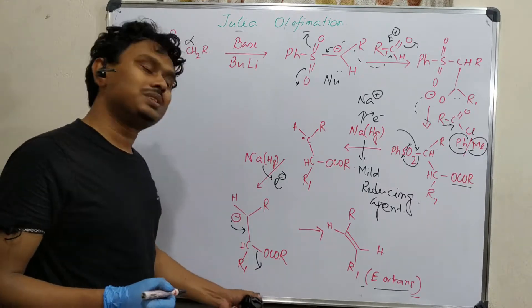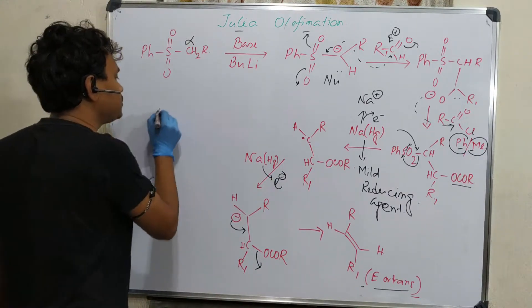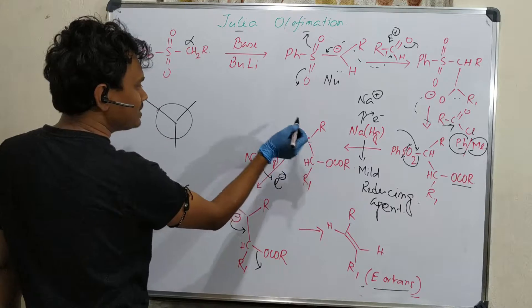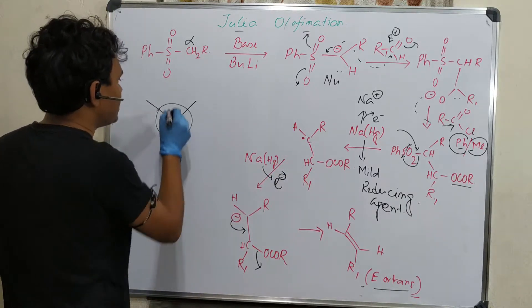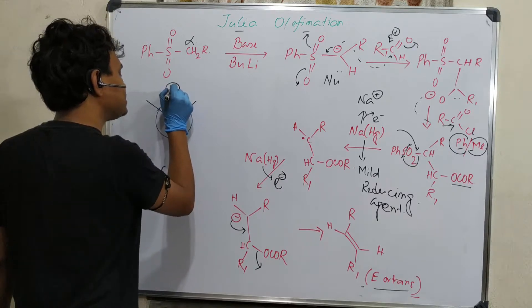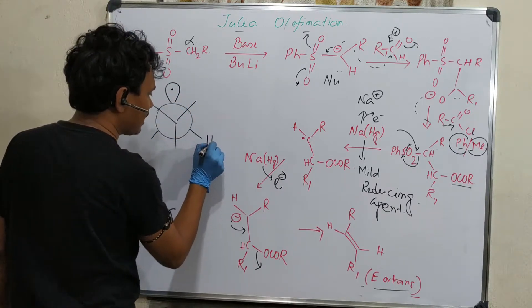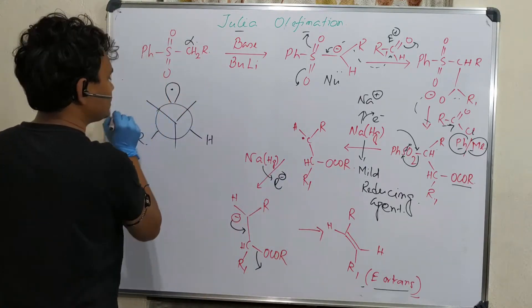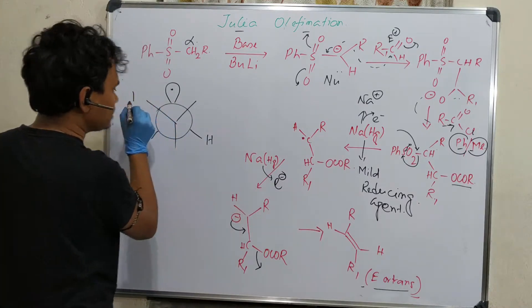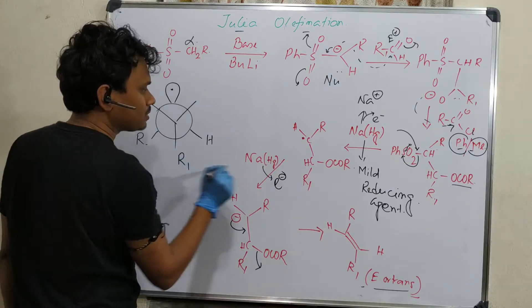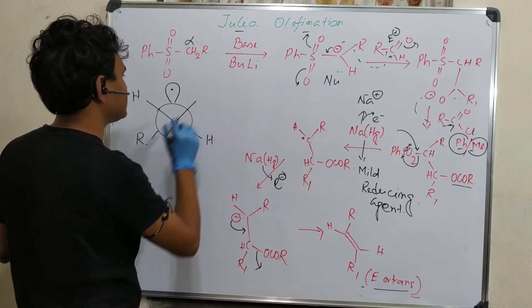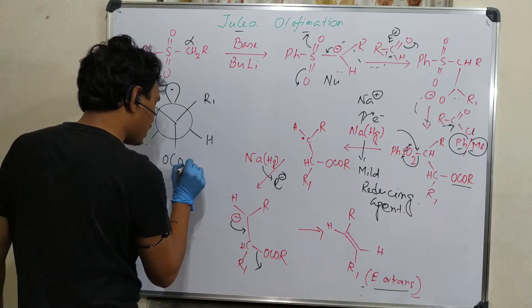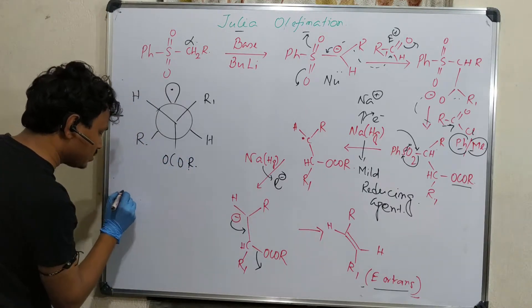This anion attacks this carbon and it leaves to produce E or trans product. The question is how it produces E or trans? The answer is based on Newman projection. If we consider the back carbon, this is single bond with H and R on one side.